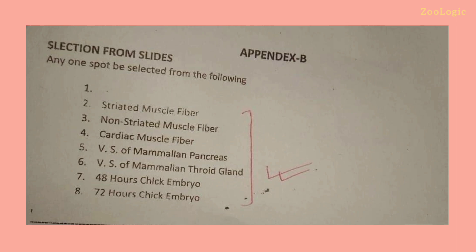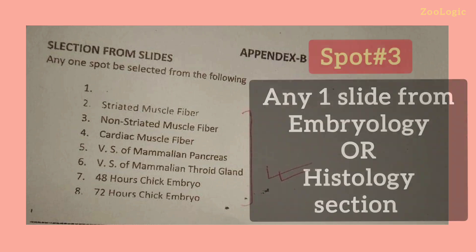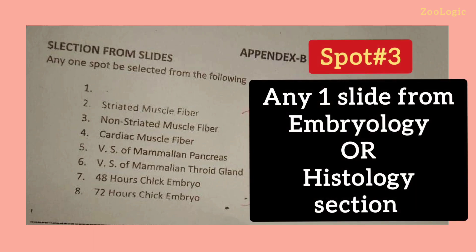The last spot, spot number three, comes from slides — either from the embryology or histology portion. Any one slide is selected; you identify the material, write three characteristics, draw a diagram, and label the basic three parts. Because all labelings cannot be done in one minute, focus on the key parts and draw a basic sketch of the identified material.